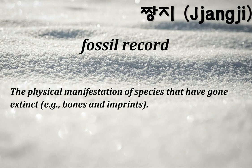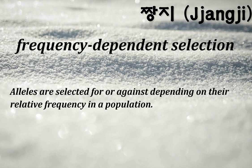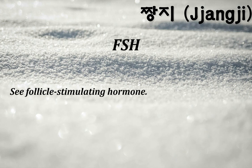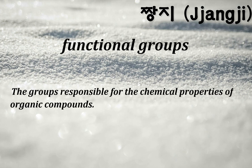Fossil record: the physical manifestation of species that have gone extinct, e.g., bones and imprints. Frequency-dependent selection: alleles are selected for or against depending on their relative frequency in a population. FSH: follicle-stimulating hormone. Functional groups: the groups responsible for the chemical properties of organic compounds.